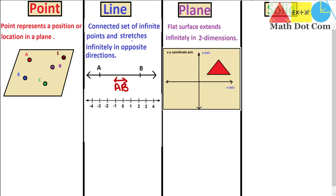Now we will move towards the plane. The next fundamental object of geometry is the plane. A plane is defined as a flat surface that extends infinitely in two dimensions. The dimensions are very important here. We will discuss the dimensional difference between all four types of objects, but currently we are just concerned with the definition. As the diagram shown, this is a plane.